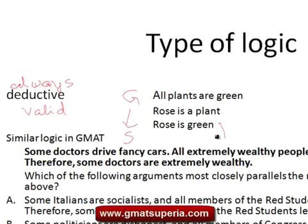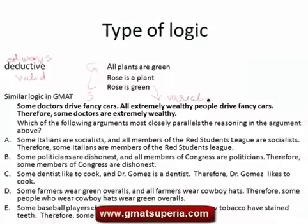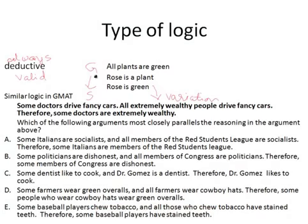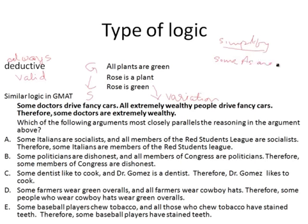Here is an argument of deductive reasoning — a variation of what you can see here: 'Some doctors drive fancy cars; extremely wealthy people drive fancy cars; therefore some doctors are extremely wealthy.' Now what are you supposed to do with this argument? You need to find a similar argument. A simpler method is to draw a Venn diagram or redefine the question in simplified form using A, B, C, etc., and you would know which argument follows the same structure.